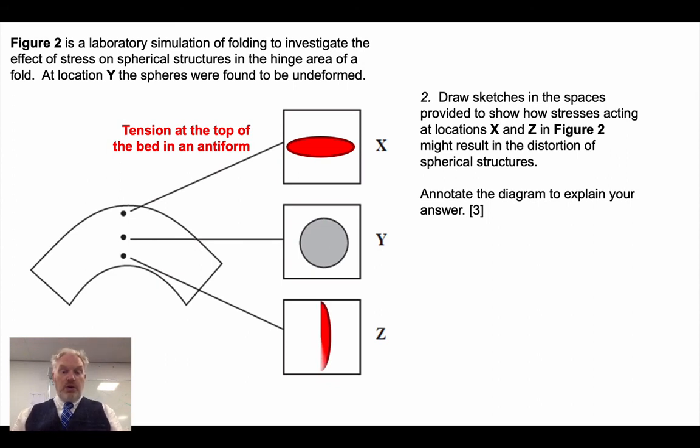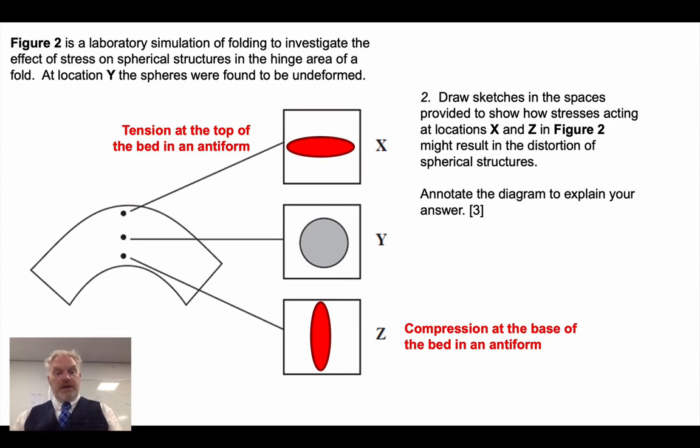At Z then, we'll also see an oval, but this one is at right angles to the bedding surface, because at the bottom of the bed in an antiform, we get compression.